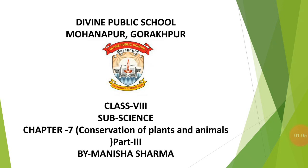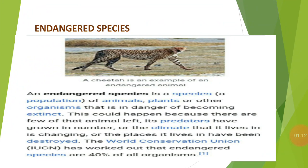First of all, we know what are endangered species. These are mainly the species that are at high risk of becoming extinct. Extinct means disappear. This is because of a certain rapid decrease in their population, or loss of their critical habitat. Previously, any species of plants and animals that was threatened with extinction could be called endangered species.